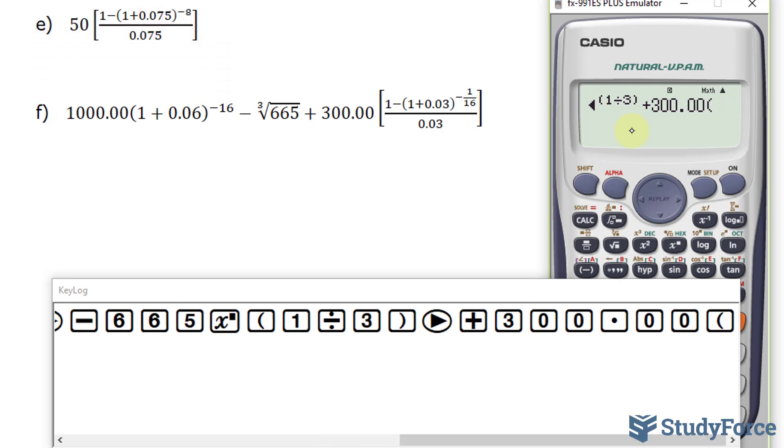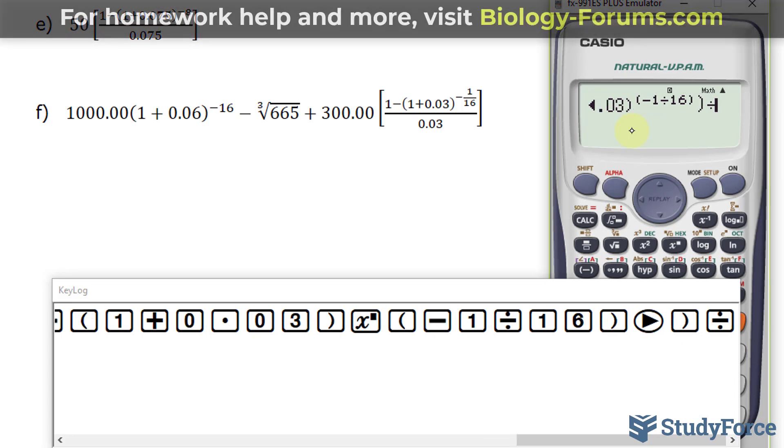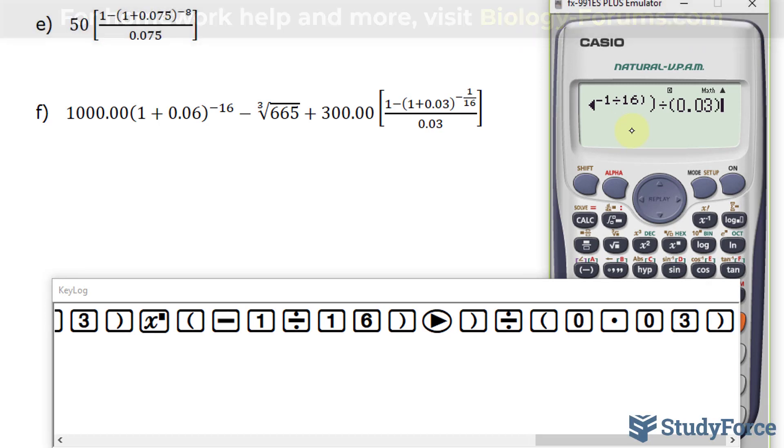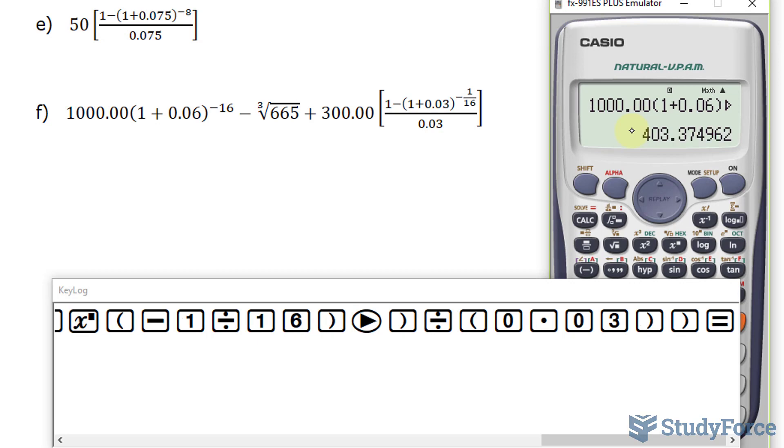Plus 300.00. We open up the big bracket. And within this big bracket is a fraction. A numerator gets its own parentheses. Open that up: 1 minus bracket 1 plus 0.03, close that parentheses. Raise that to the power of negative 1 over 16, all in parentheses as well. Close the numerator. Divided by, open the denominator: 0.03, close the square bracket. And you should end up with your answer being 403.37. And to two decimal places, we should stop at 37.